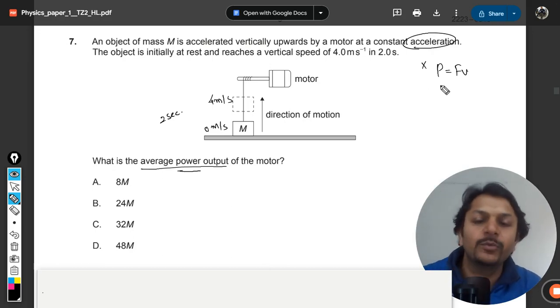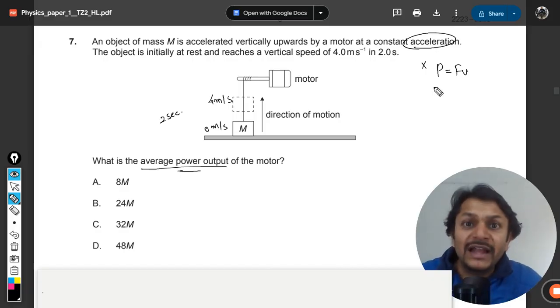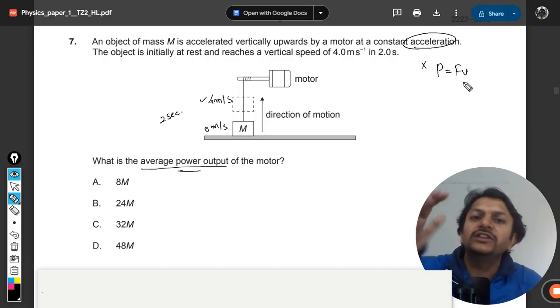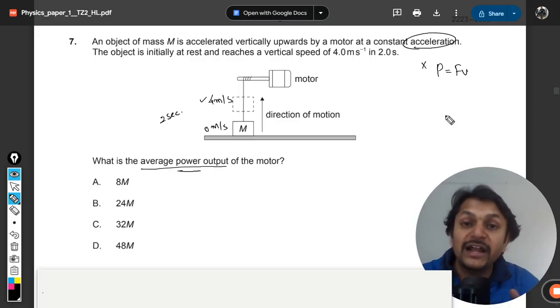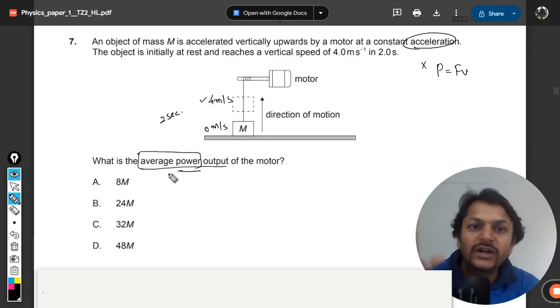Yes, you can find the instantaneous power at some instant. You can find the force and the power used instantaneously, but that will be a variable. It is going to change at every instant. That is why we have the concept of average power, because power is not constant.